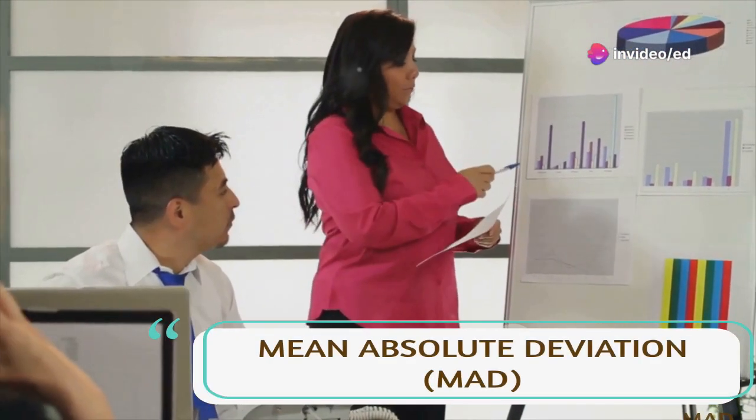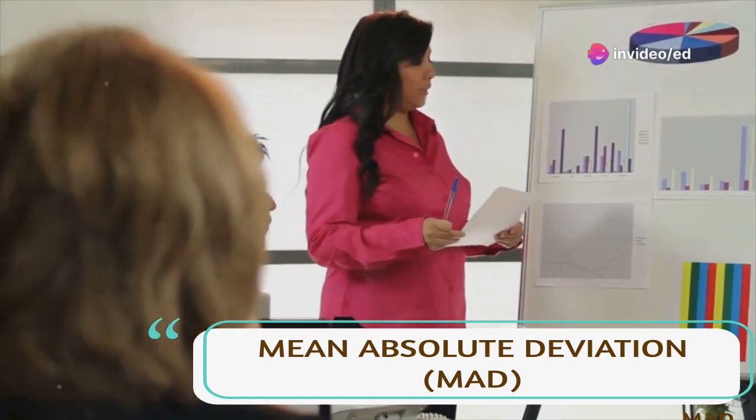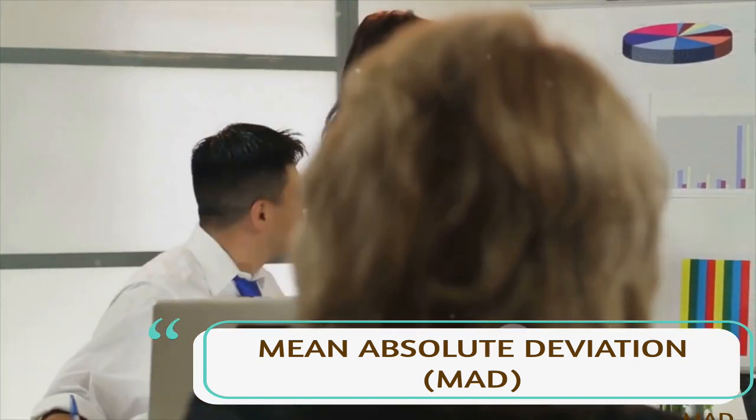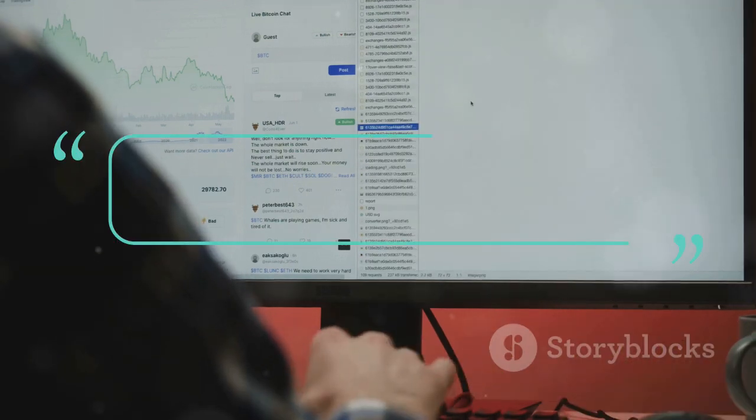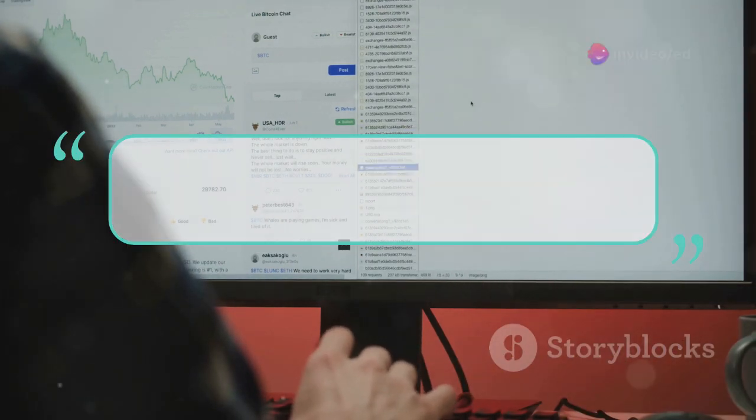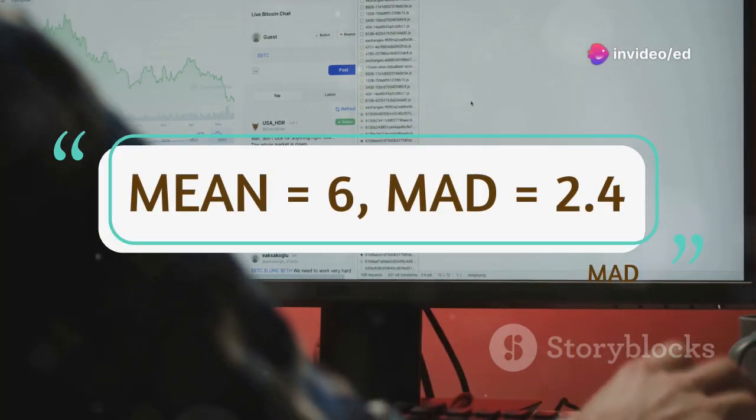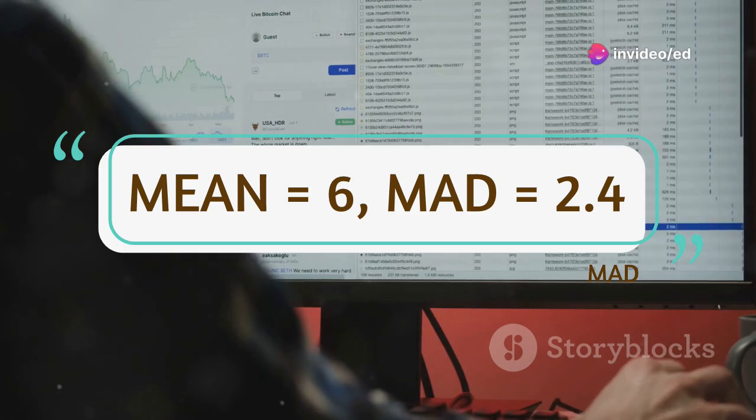Lastly, the mean absolute deviation, MAD, provides the average of the absolute differences between each score and the mean. For the dataset 2, 4, 6, 8, 10 with a mean of 6, the MAD is 2.4, calculated from the absolute differences 4, 2, 0, 2, 4.